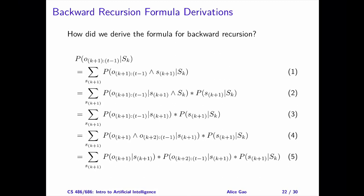Let's look at the second part of the derivations. In these steps, we derive the recursive formula for backward recursion. We are going backward in time. Given the probability of an observation sequence starting on day k plus 2, we can calculate the probability of an observation sequence starting on day k plus 1.